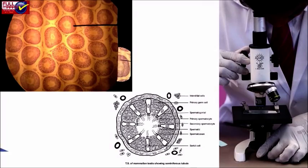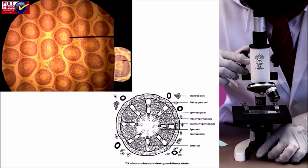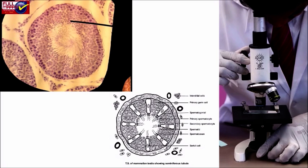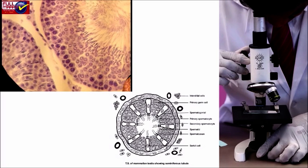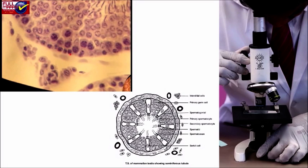Observations: each testis is oval in shape and covered by three layers — outer tunica vaginalis, middle tunica albuginea, and inner tunica vasculosa. Each testis contains a large number of highly coiled seminiferous tubules, which appear rounded in the TS. Each seminiferous tubule is lined by cuboidal cells and some modified pyramid-shaped cells called Sertoli cells or nurse cells, which provide nourishment to the developing sperms.